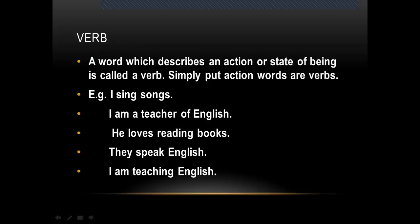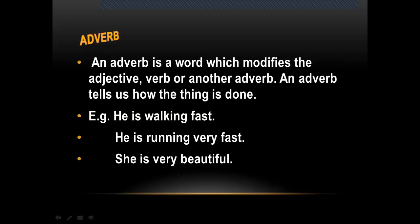A word which describes an action or state of being is called a verb. Simply put, action words are verbs. 'I sing songs' — 'sing' is an action word, so 'sing' is a verb. 'I am a teacher of English' — here 'am' is not describing an action but a state of being. 'He loves reading books' — 'loves' is a verb. 'They speak English' — 'speak' is a verb. 'I am teaching English' — 'teaching' is the main verb and 'am' is a helping word.